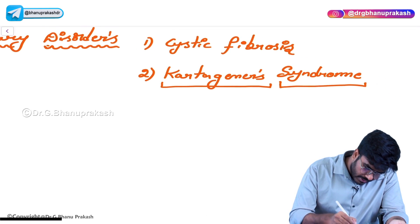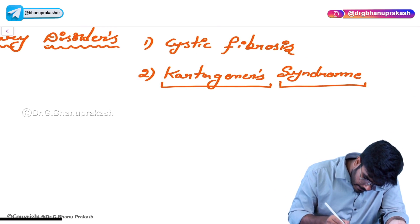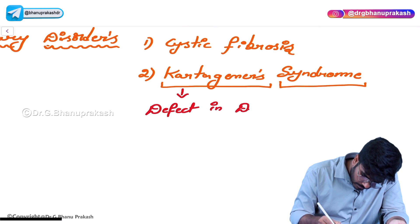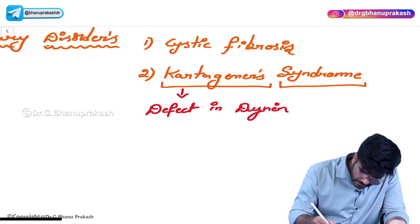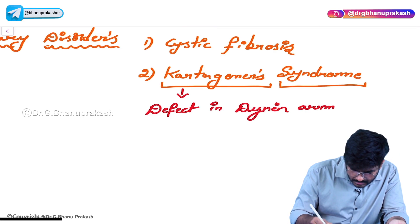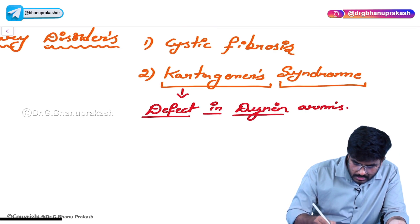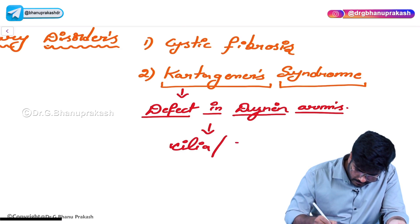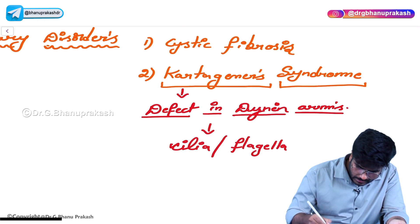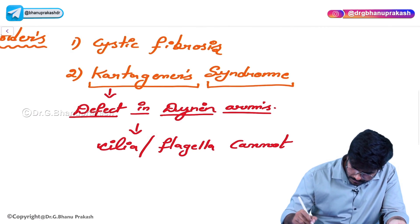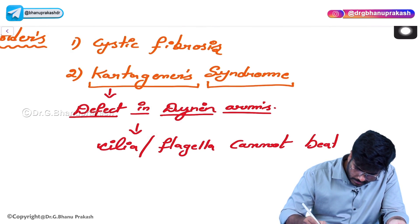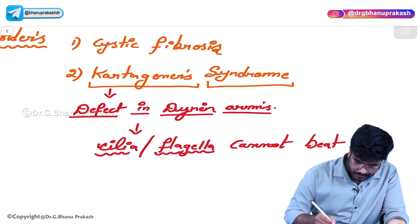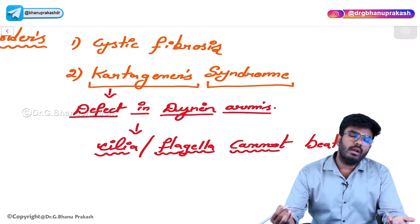The problem in Kartagener's syndrome is a defect in the dynein arms. Because of this defect, cilia or flagella cannot beat. There is a problem in the movement of cilia or flagella.